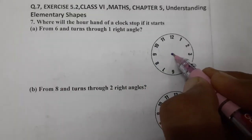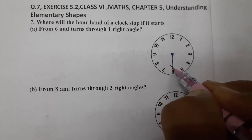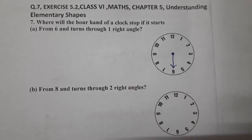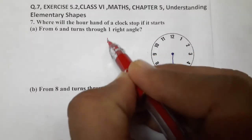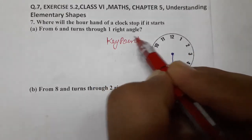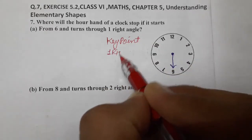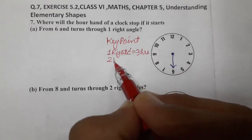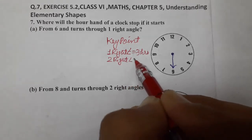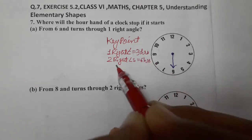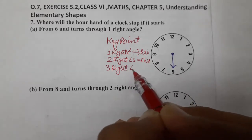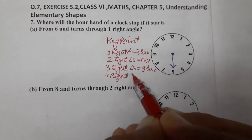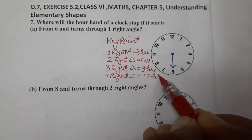We know one right angle equals 3 hours on a clock. The key points are: one right angle = 3 hours, two right angles = 6 hours, three right angles = 9 hours, and four right angles = 12 hours. These are the key points you must notice.